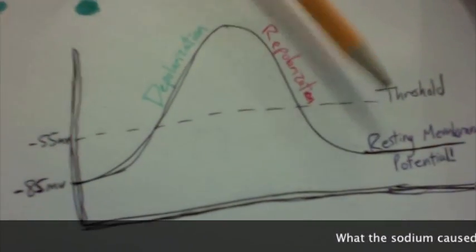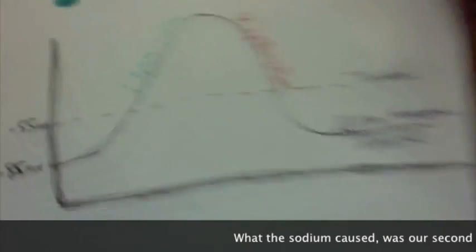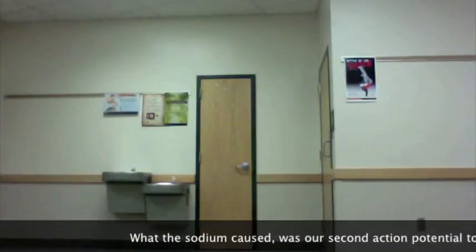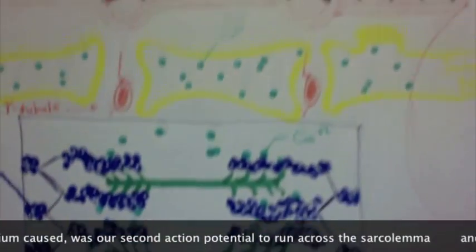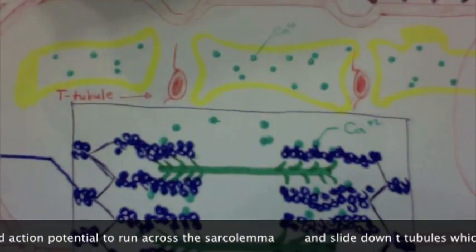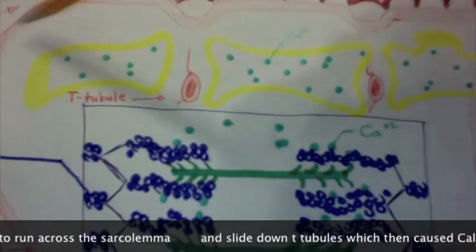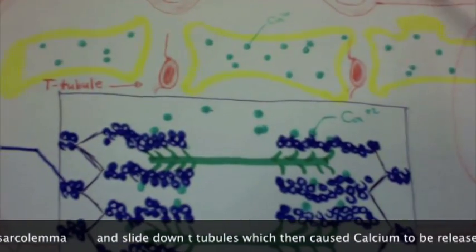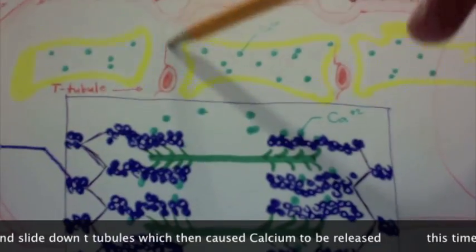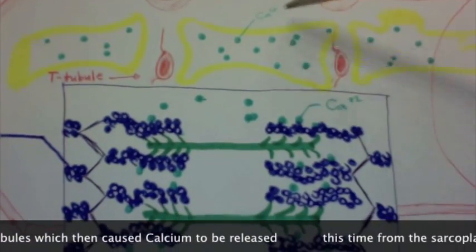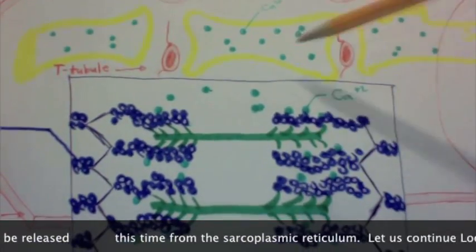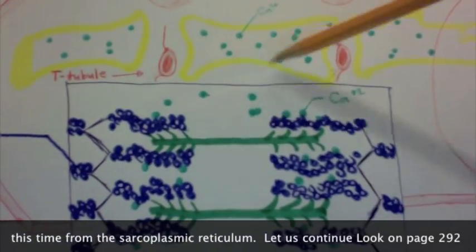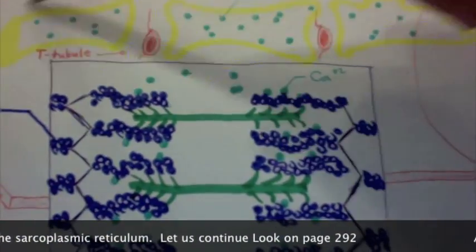What the sodium caused was a second action potential to run across the sarcolemma and inside T-tubules, which then causes calcium to be released, this time from the sarcoplasmic reticulum.